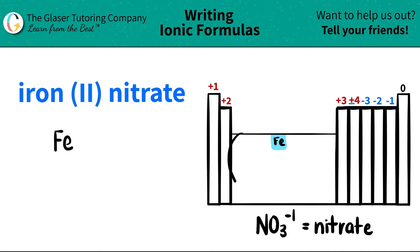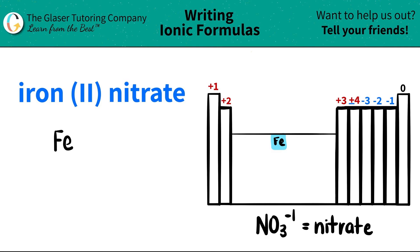Now, since iron is part of the transition metals, what charge is it going to be? We need a charge in order to write the formula. That's where this Roman numeral comes in. The Roman numeral is always the charge of the metal. So in this case it's a 2, meaning iron has a plus 2 charge.